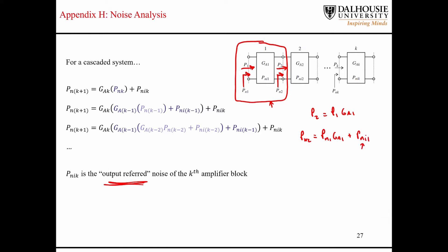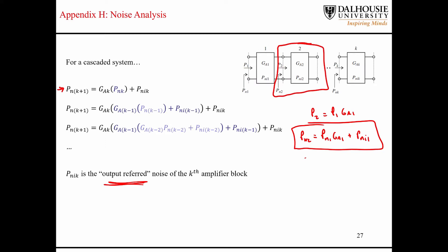The subscript NI refers to the internally generated noise of the amplifier. For this stage, if K equals 1 then K plus 1 equals 2. What I'm trying to do on the left is generalize this behavior. The first line at the top represents the same thing shown for K equals 1. For the second stage, I replace the input noise to the second stage by what was derived: the gain of the previous stage multiplied by the noise power incident upon it, plus the internally generated noise of the previous stage.